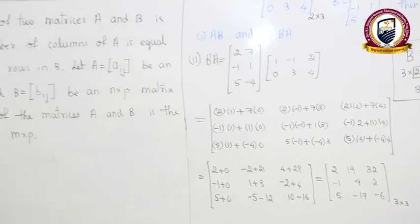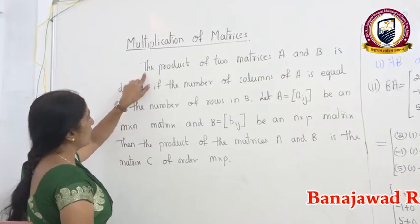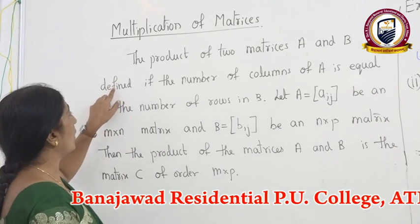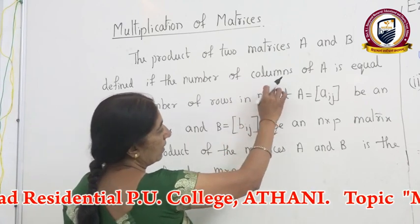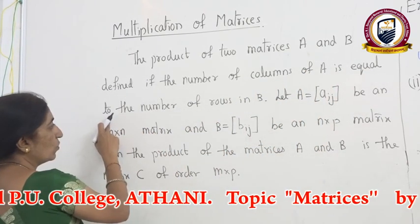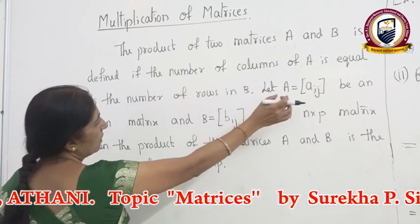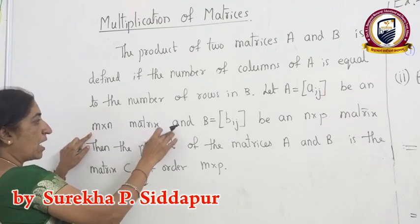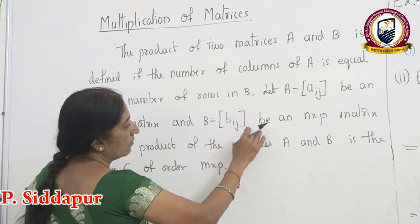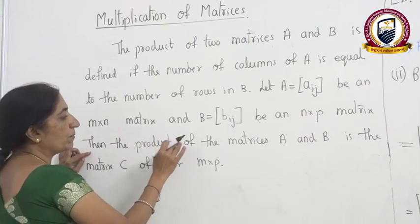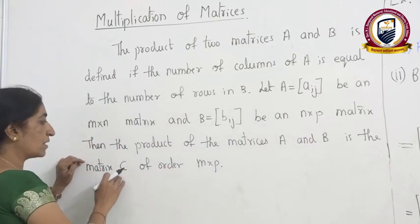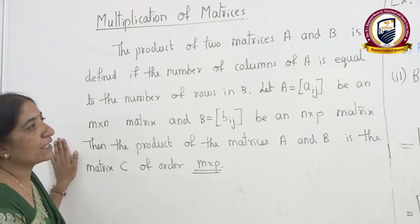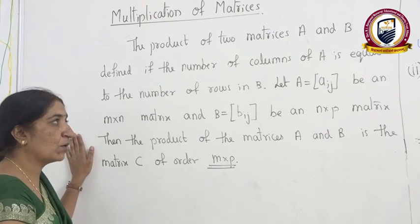With this example, we are moving to the definition, which you can now understand easily. The product of two matrices A and B is defined if the number of columns of A is equal to the number of rows in B. Let A equal Aij be an M by N matrix, and B equal Bij be an N by P matrix. Then the product of matrices A and B is the matrix C, and its order is M by P. This is how we define multiplication of matrices. I will explain some more examples on product of matrices.